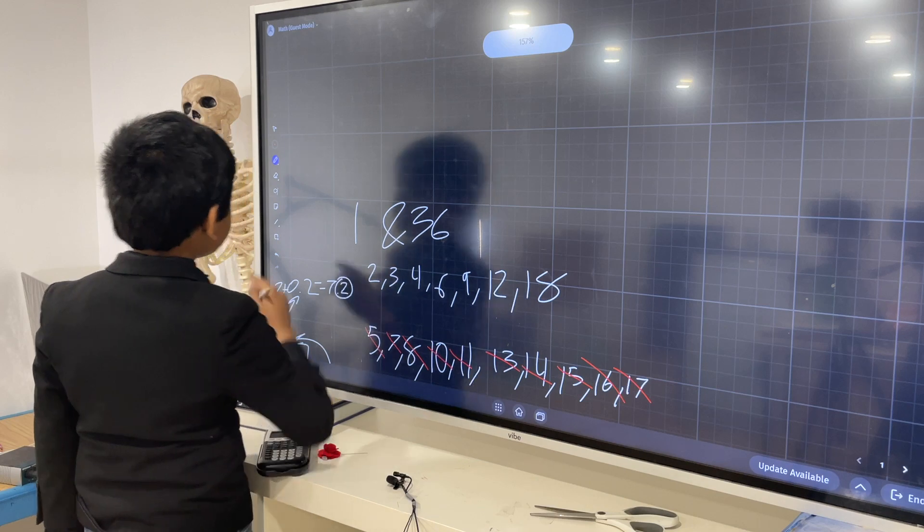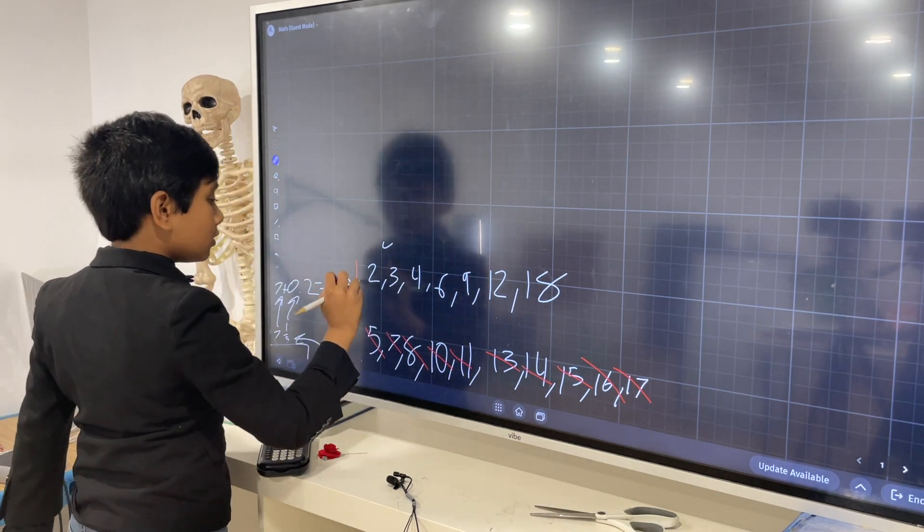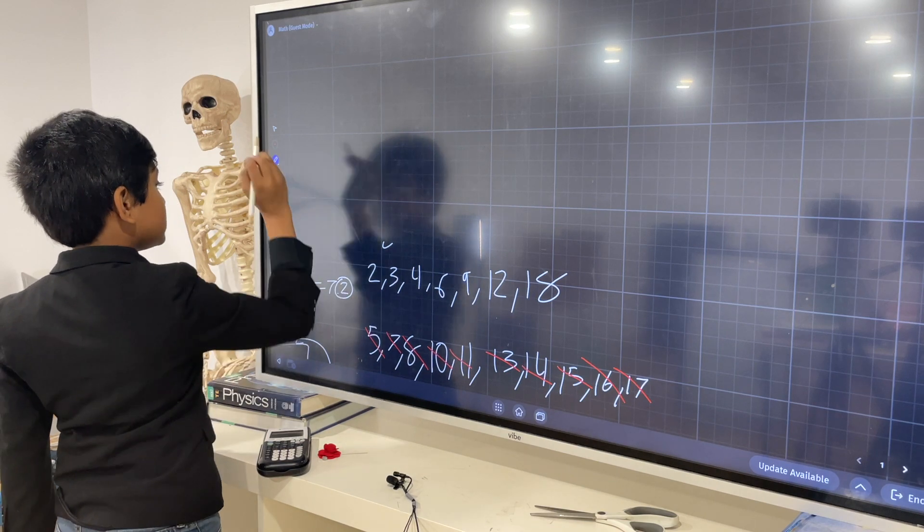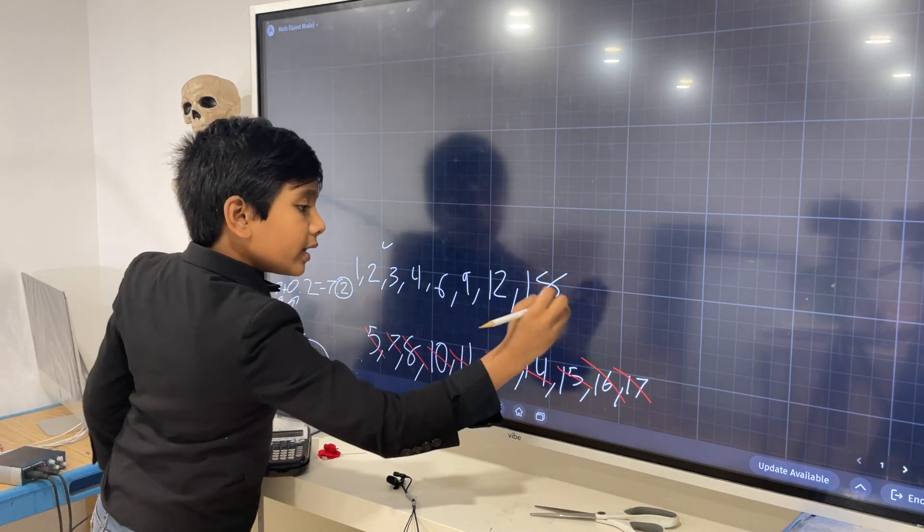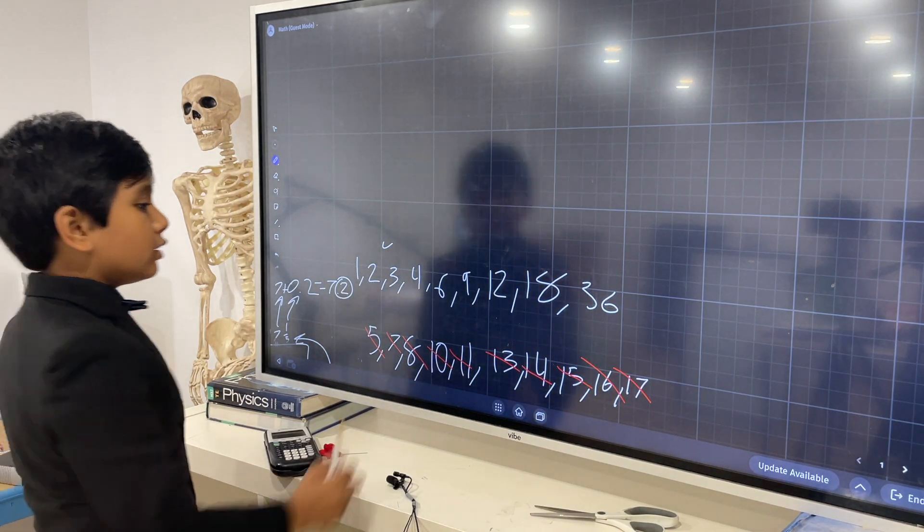So these are the factors that we have left. So let's put back these guys. And here are our factors: 1, 2, 3, 4, 6, 9, 12, 18, 36.